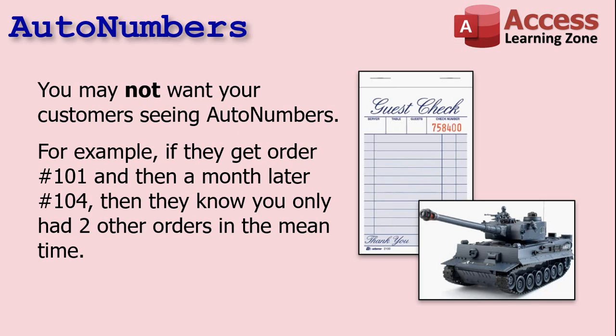For some things, you may not want customers seeing auto numbers. For example, your order numbers — if a customer has order number 101 and a month later gets order number 104, they know you've only had two other orders in the meantime. That brings up something called the German tank problem, which I talk about in another video, where the Allies were able to tell exactly how many tanks the Germans had in World War II because they'd capture parts and see the serial numbers. So for some things you might want sequential numbers; for others, you don't want customers seeing your auto numbers.